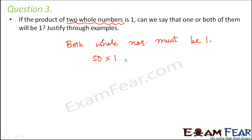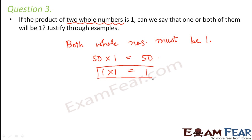Because otherwise, if you have any other non-zero number and multiply it with one, you would get the same non-zero number. Only when both are one does one into one equal one. If zero gets multiplied with one, it gives zero. That is why one is the multiplicative identity — when one is multiplied to any number, that number retains its identity.